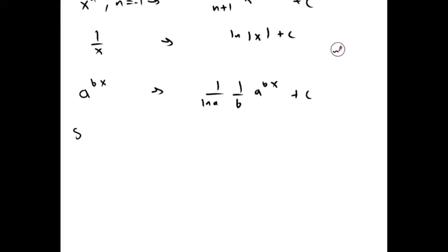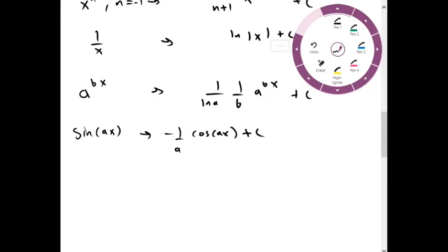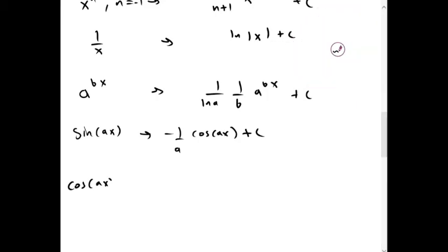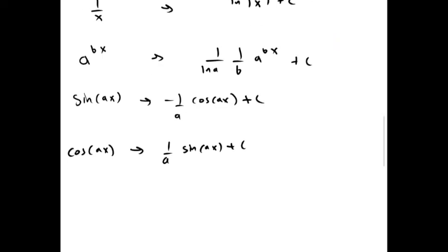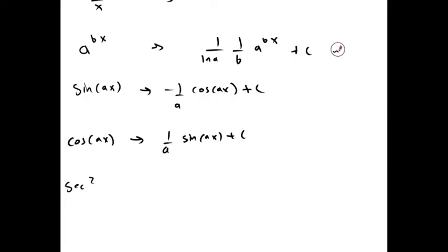If we have sin ax, the antiderivative is negative 1 over a cos ax plus c. We have cos ax, its antiderivative is 1 over a sin ax plus c. And if we have secant squared ax, its antiderivative is 1 over a tangent ax plus c.